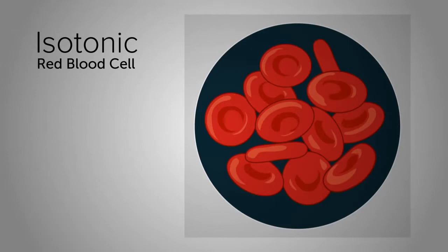For a red blood cell, an isotonic solution is a state of equilibrium. The red blood cell will appear as a dimpled hockey puck shape called a biconcave disc.